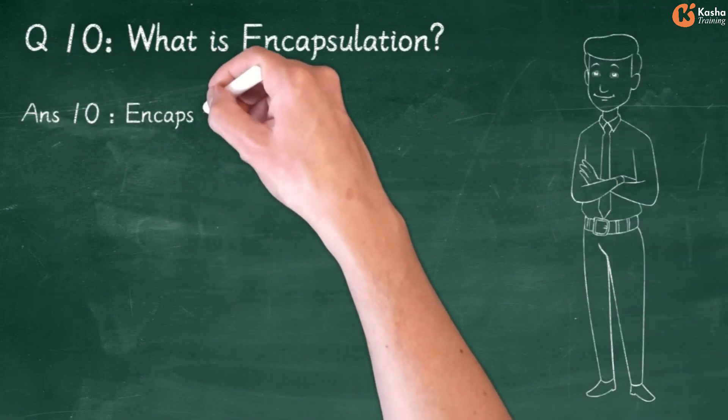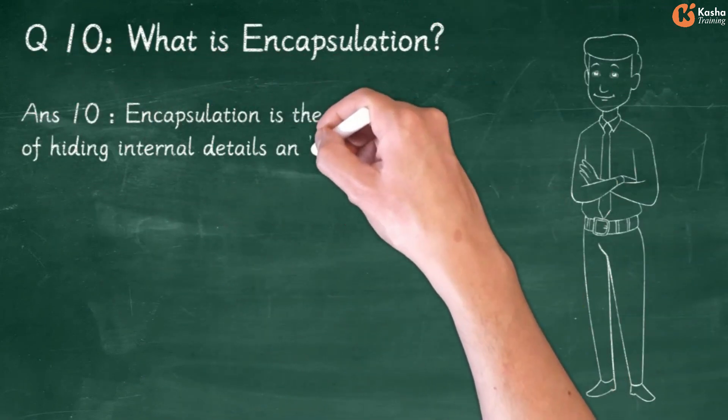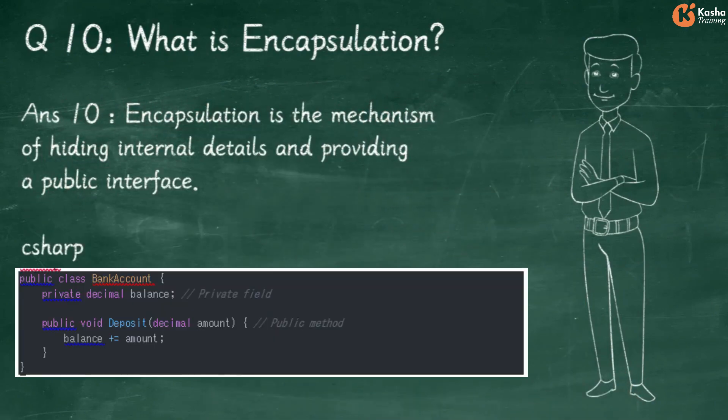Answer 10: Encapsulation is the mechanism of hiding internal details and providing a public interface. Example in C#: Public Class BankAccount has Private Decimal Balance as a Private Field. Public Void Deposit with Decimal Amount is a Public Method where Balance += amount.